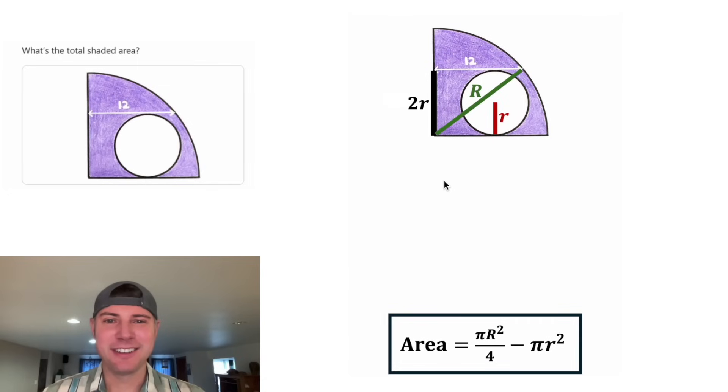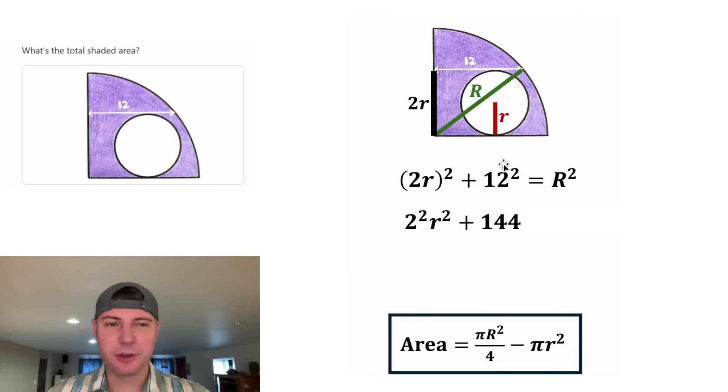And now we can use the right triangle. Let's do Pythagorean theorem. It's gonna be (2r)² + 12² = R². This exponent will distribute to both of these, giving us 2² r². And then 12² is equal to 144 and we can bring down the R². And 2² is equal to 4.